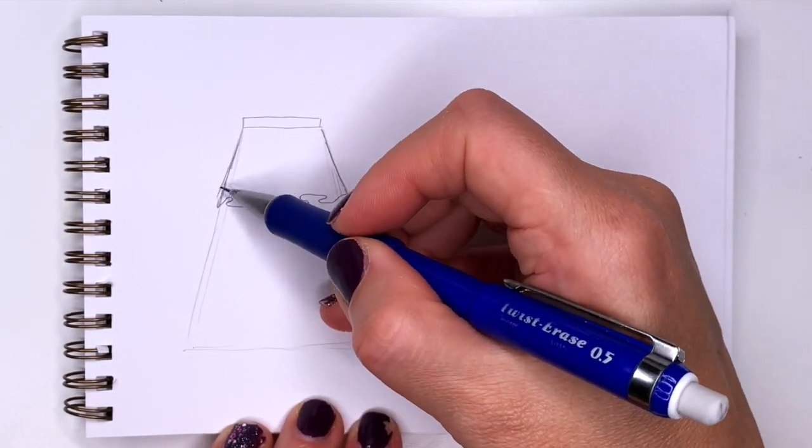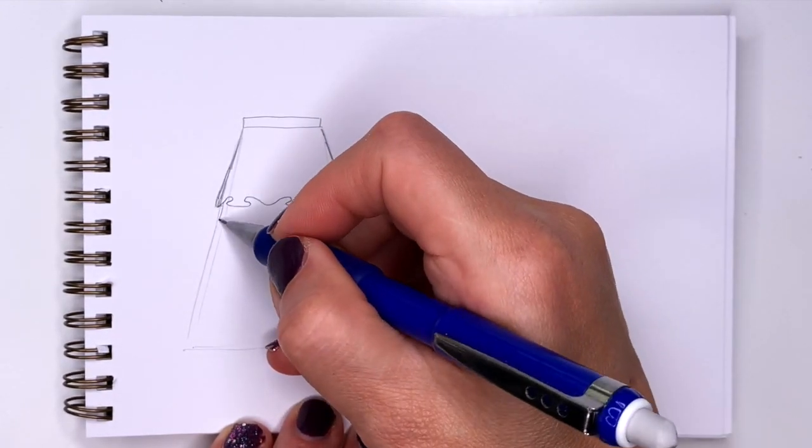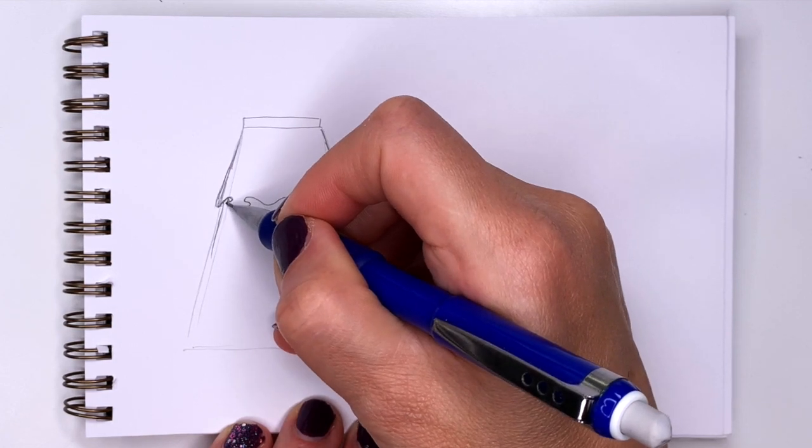So now to make these ruffles more realistic I will add some shading to it. There's shading in these corners here.